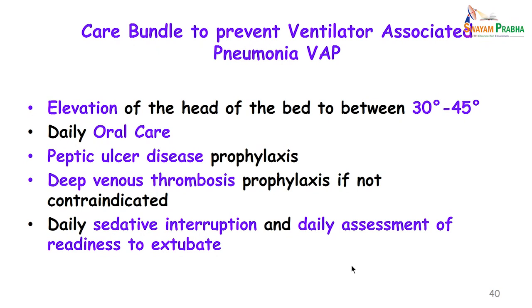Care bundles to prevent ventilator associated pneumonia include: elevation of the head of the bed at 30 to 45 degrees, daily oral care, peptic ulcer disease prophylaxis, deep vein thrombosis prophylaxis if not contraindicated, daily sedative interruption, and daily assessment for readiness to extubate. The idea in all these interventions is to ensure we try and remove these devices as soon as possible.